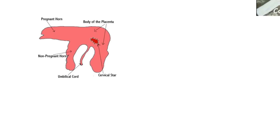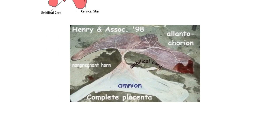Here's a new concept — the cervical star. This is the part of the placenta that was facing the cervix. There aren't going to be any connections between the placenta at that point because the cervix isn't really made to exchange nutrients with the fetus. Looking at a real horse placenta photograph, we can see the part in the non-pregnant horn and the umbilical cord. We're talking about several feet in length — I'd guess around four to four and a half feet.